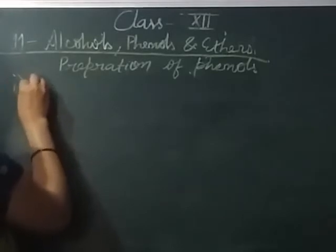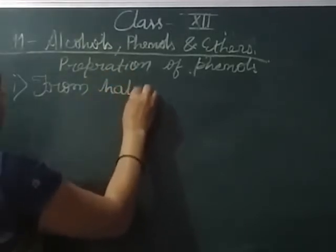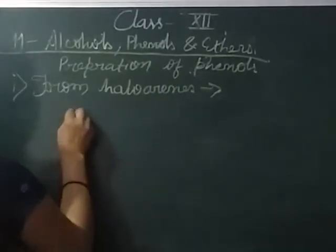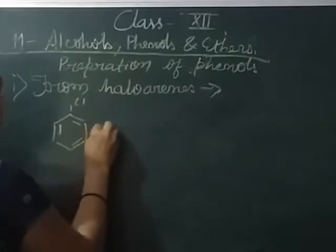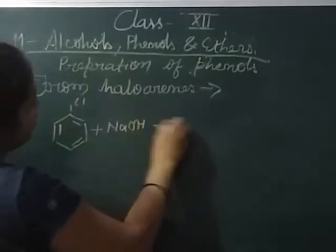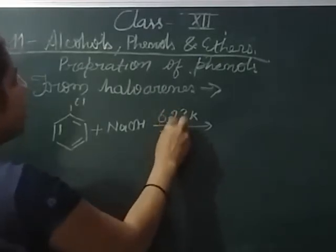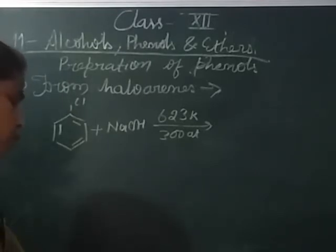The first preparation method is from haloarenes. In this method, chlorobenzene reacts with NaOH in the presence of 623 Kelvin temperature and 300 atmospheric pressure. The sodium hydroxide converts chlorobenzene into sodium phenoxide.